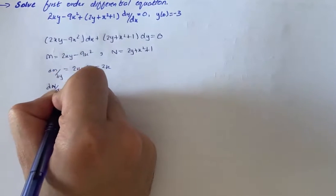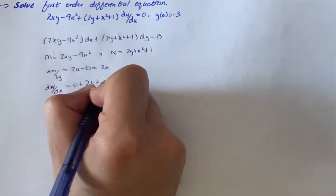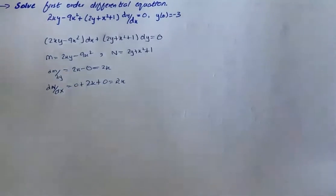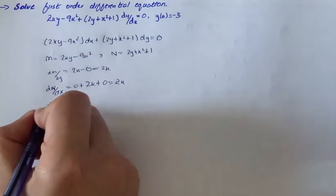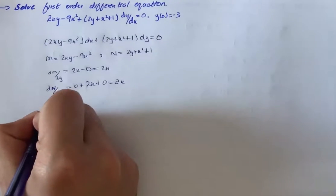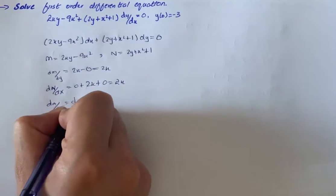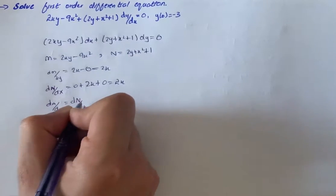dN/dx equals 0 plus 2x plus 0, that is equal to 2x. So now we have dM/dy and dN/dx, and we know that dM/dy equals dN/dx. Therefore, the equation is exact.